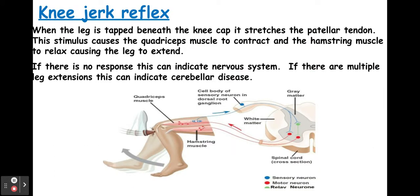The knee jerk reflex is where the knee is tapped just underneath the kneecap, which stretches something called the patella tendon, and this causes your quadriceps muscles to contract, swinging your leg outwards. Now if the doctor were to do this and you had no response, it can indicate some damage within the nervous system, and if you have excessive leg extensions it can indicate cerebellar disease. So the main thing to know is that when the leg is tapped, it extends.